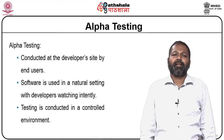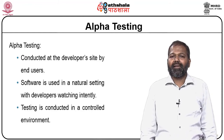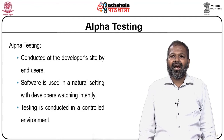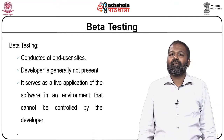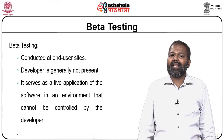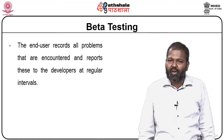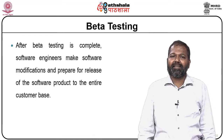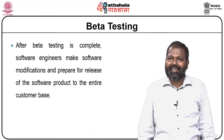Alpha testing is conducted at the developer site by end users, where the software is used in a natural setting with developers watching intently in a controlled environment. Beta testing is conducted at end-user sites where developers are not generally present. It serves as a live application of the software in an environment that cannot be controlled by the developer. The end user records all problems encountered and reports these to the developers at regular intervals. After beta testing is complete, software engineers make modifications and prepare for release of the software product to the entire customer base.